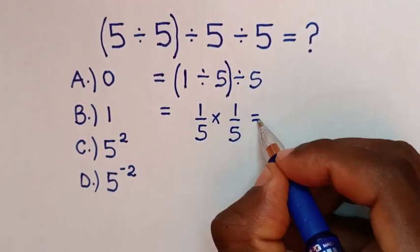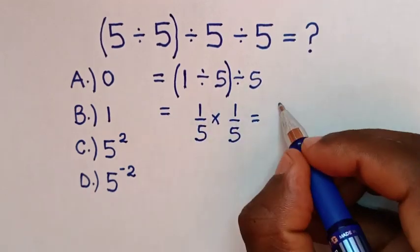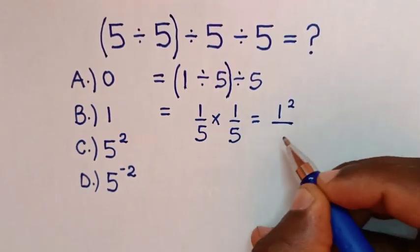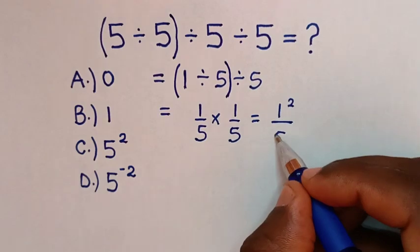Then it will be equal to 1 times 1 is 1 squared, then over 5 times 5 is 5 squared.